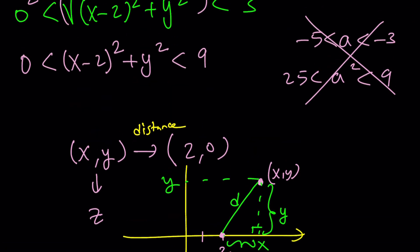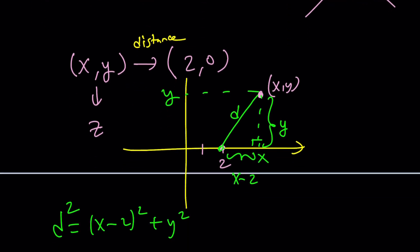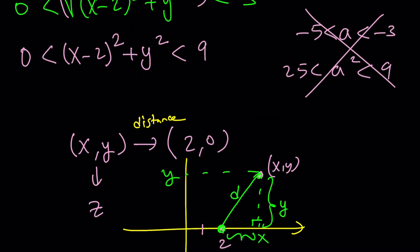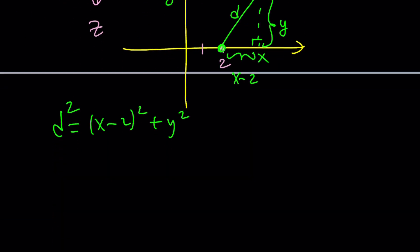But what does that mean then? It means the distance squared. So in other words, we want the distance between these two points to be, when squared, greater than 0. Of course, the distance is always greater than 0. And, especially when squared, right? And we want it to be less than 9. What does that mean?